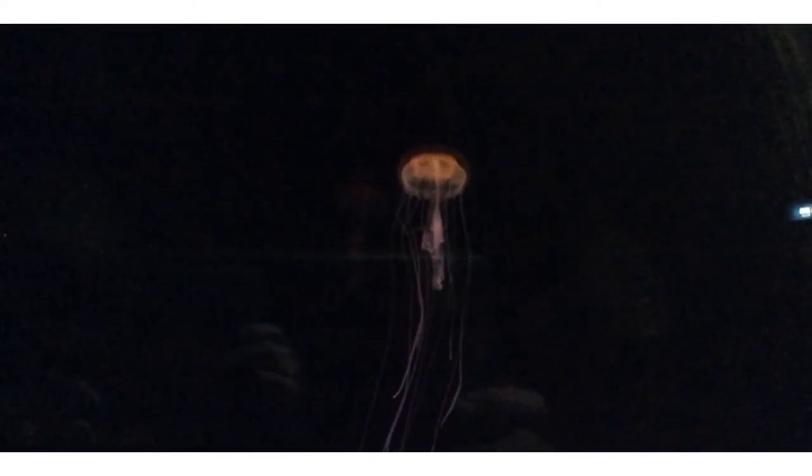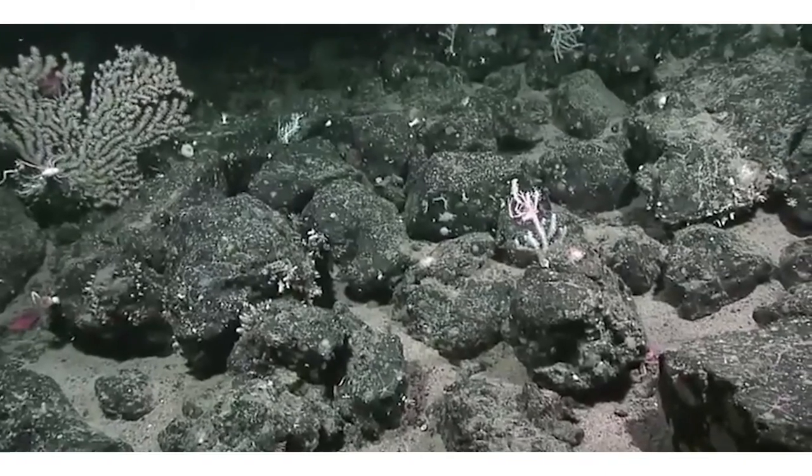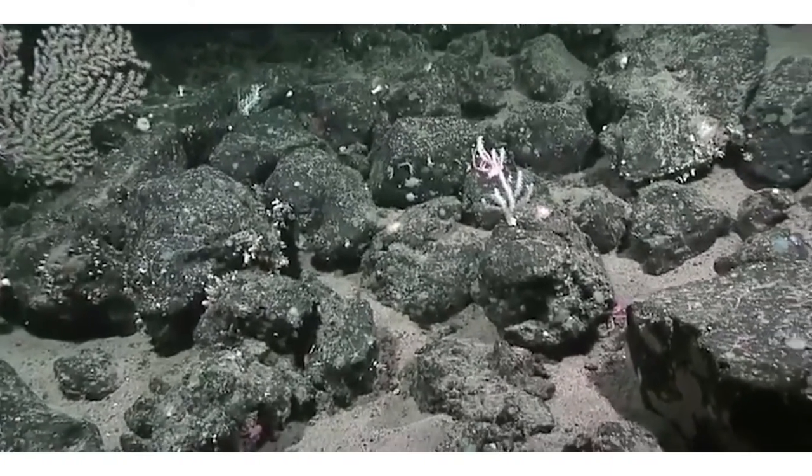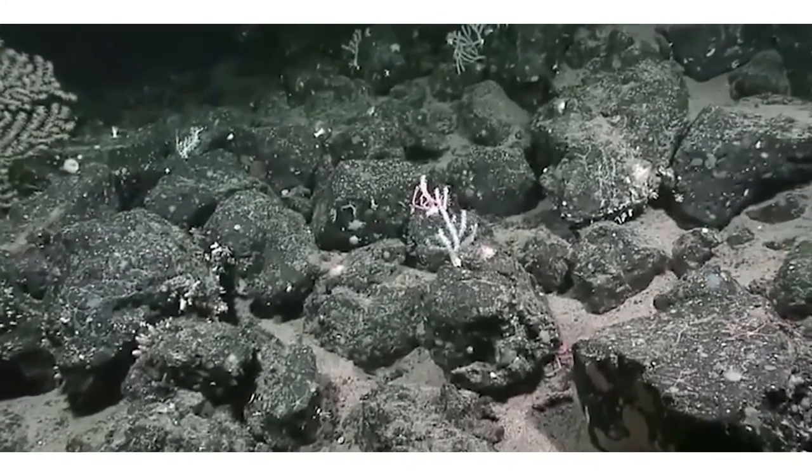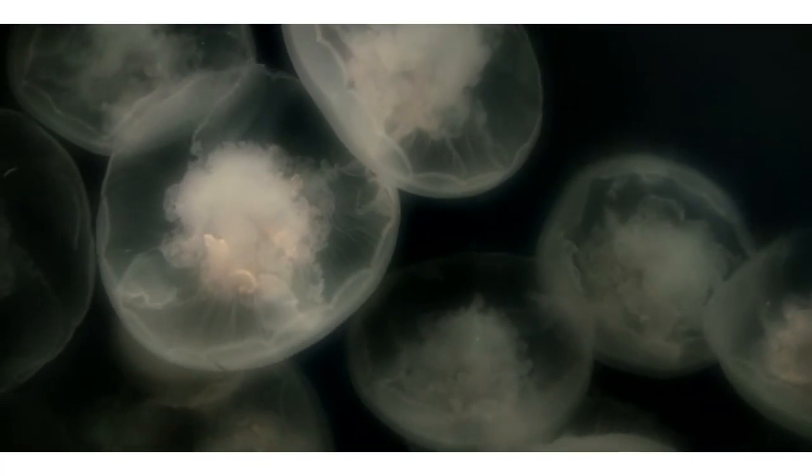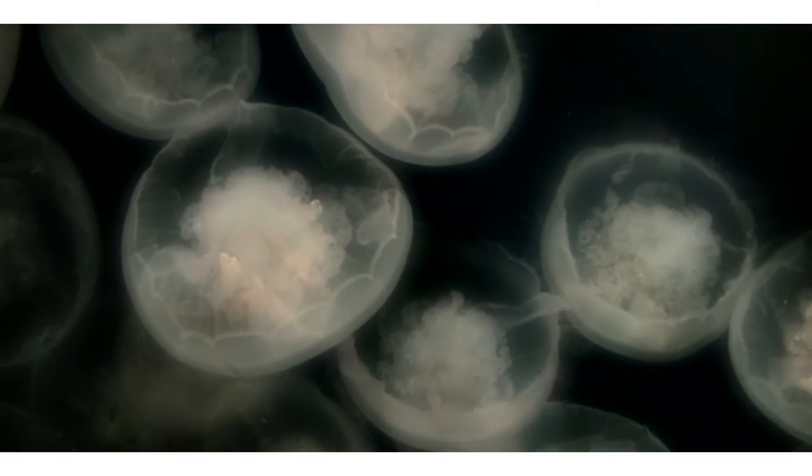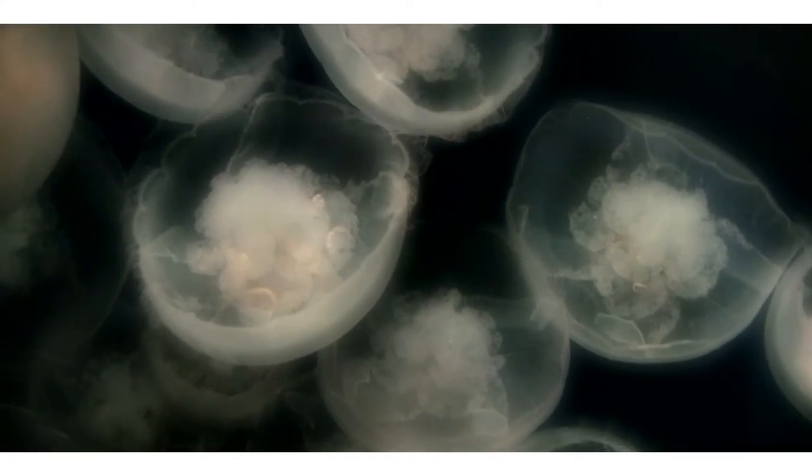One such example as to how animals have adapted to this extreme environment is color. Most animals of the deep will lack color. They may be transparent as some of the jellies, or they may be fully black and are such perfectly concealed from their predators.